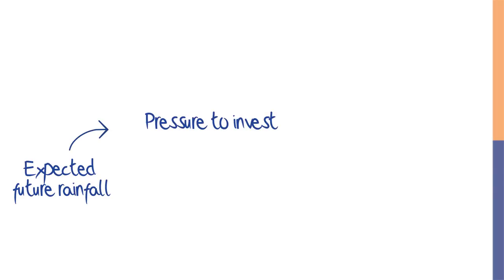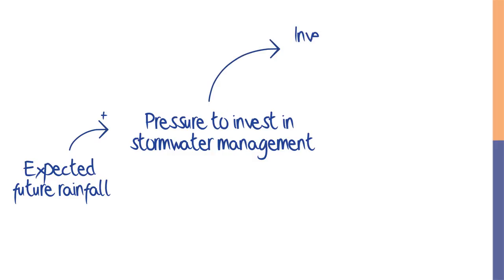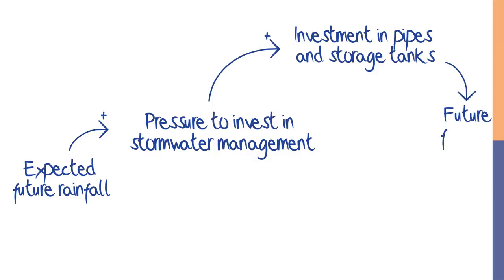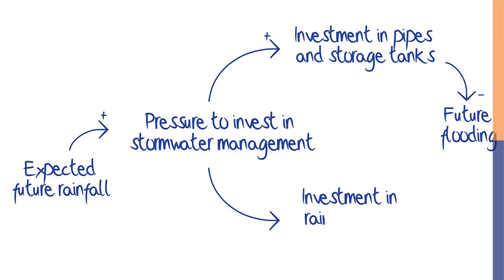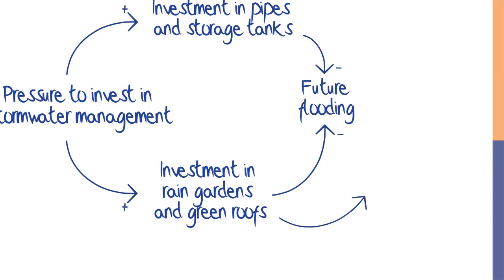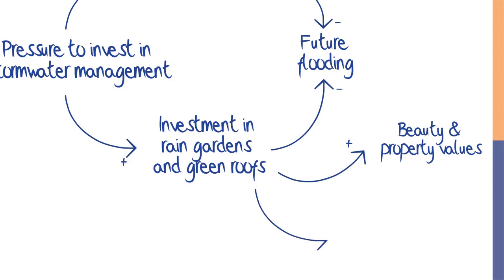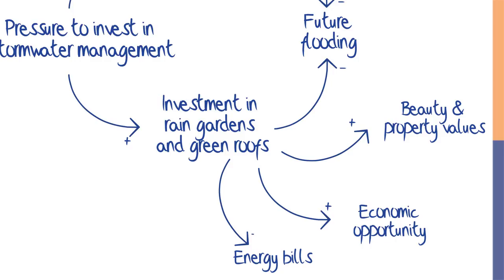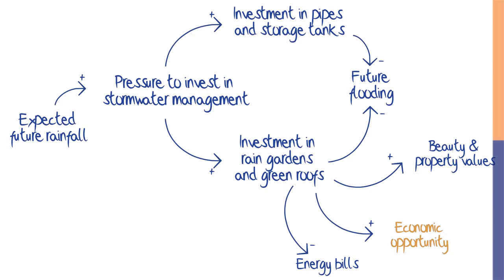A simple causal diagram can help you understand someone else's theory of how a system works and help you find new partners. In one project, a regional wastewater agency looked for the best ways to prepare for expected increases in rainfall with climate change, and became particularly interested in green infrastructure — things like green roofs, rain gardens, and porous pavement. A simple causal diagram shows the partnership opportunities: green infrastructure helps reduce future flooding, but also increases neighborhood beauty and property values, increases economic opportunity through jobs in building and maintaining gardens and green roofs, and by reducing summer temperatures helps reduce energy bills — pointing toward potential partners who care about economic opportunity, fixed incomes, and neighborhood vitality.